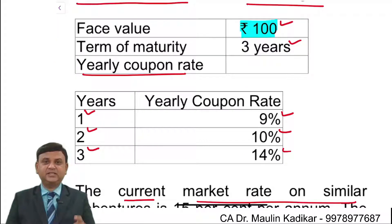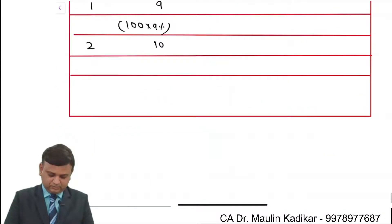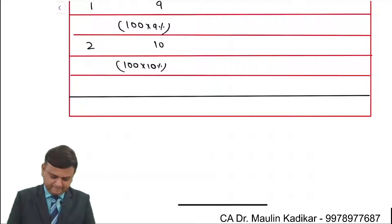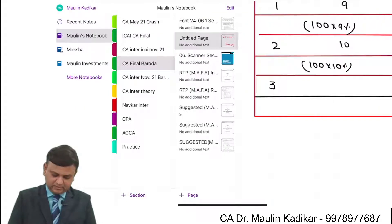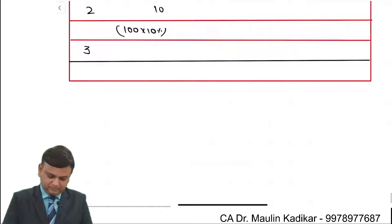In the 2nd year it is 10%. In the 3rd year it is 14%. That comes to an amount of 14.